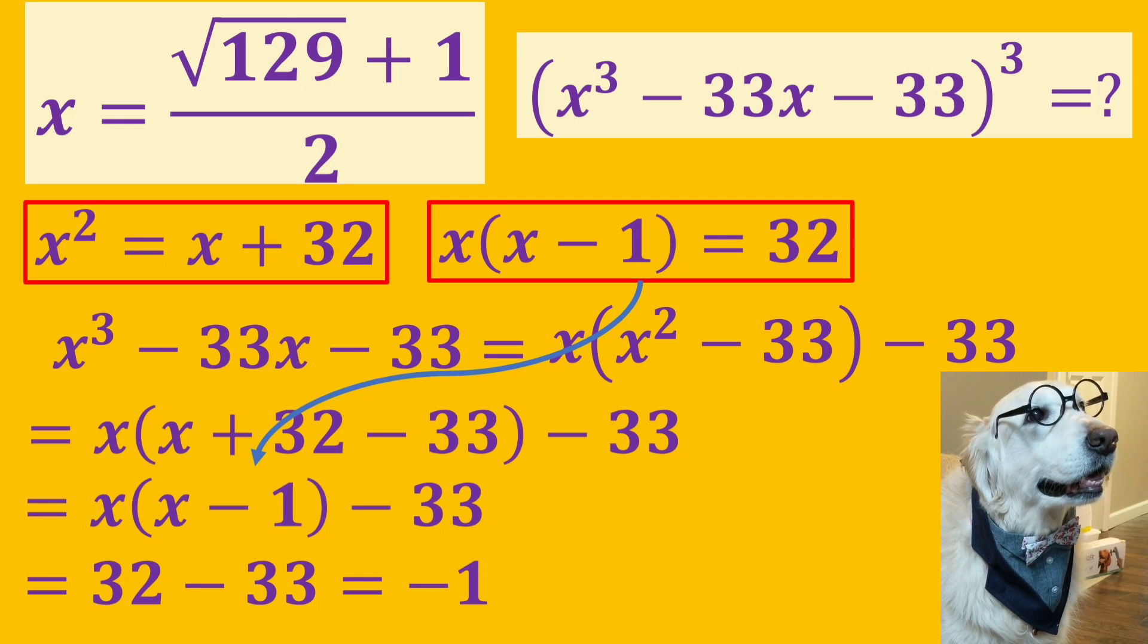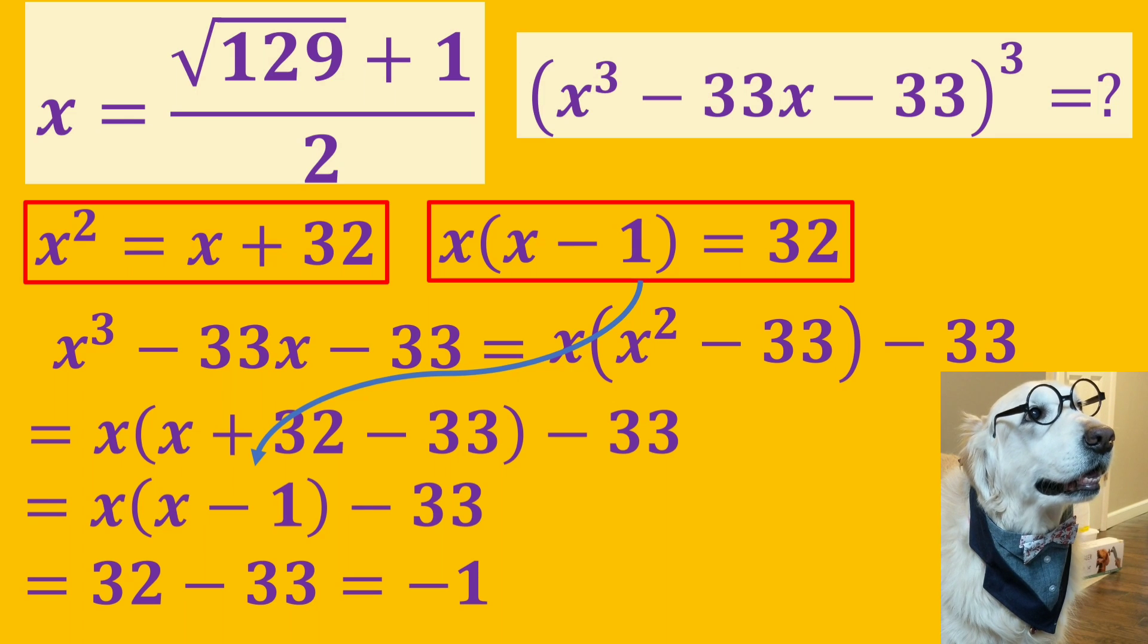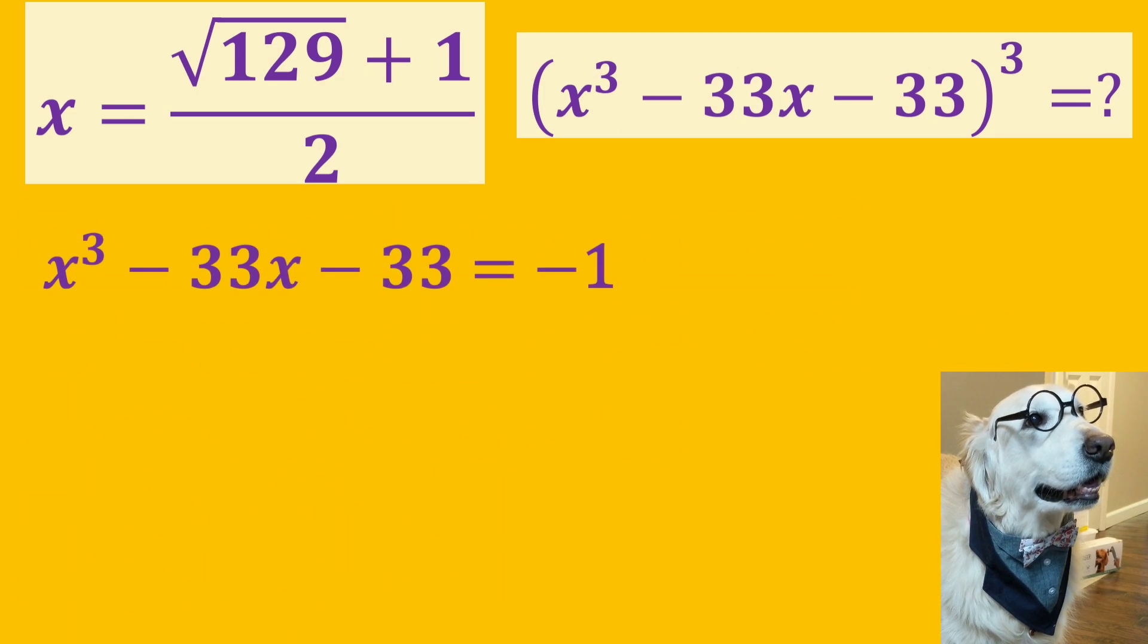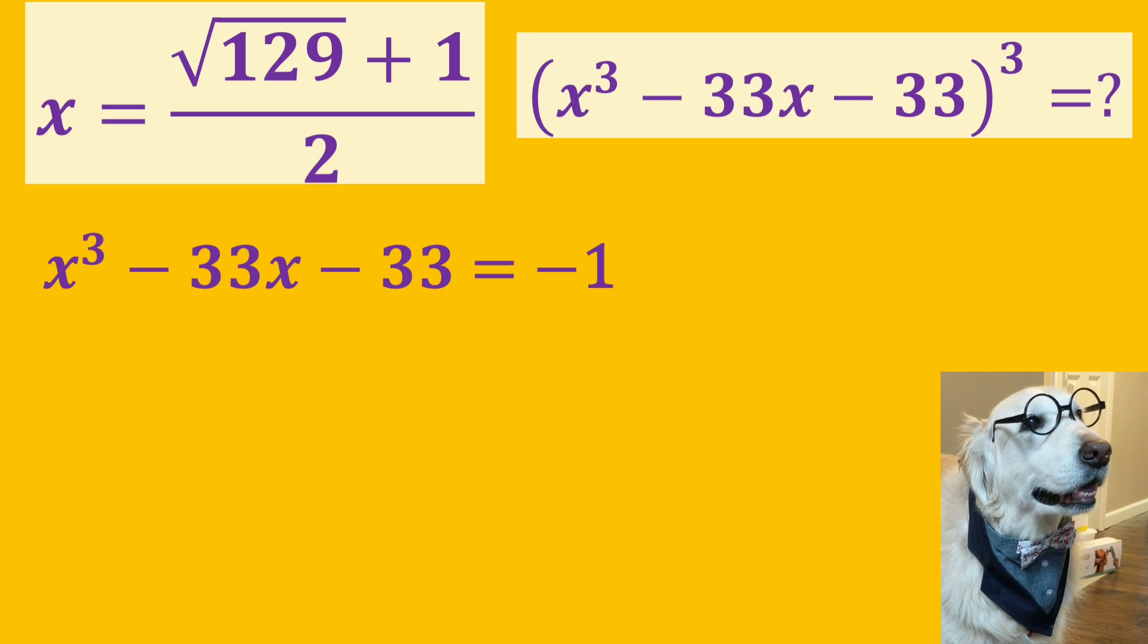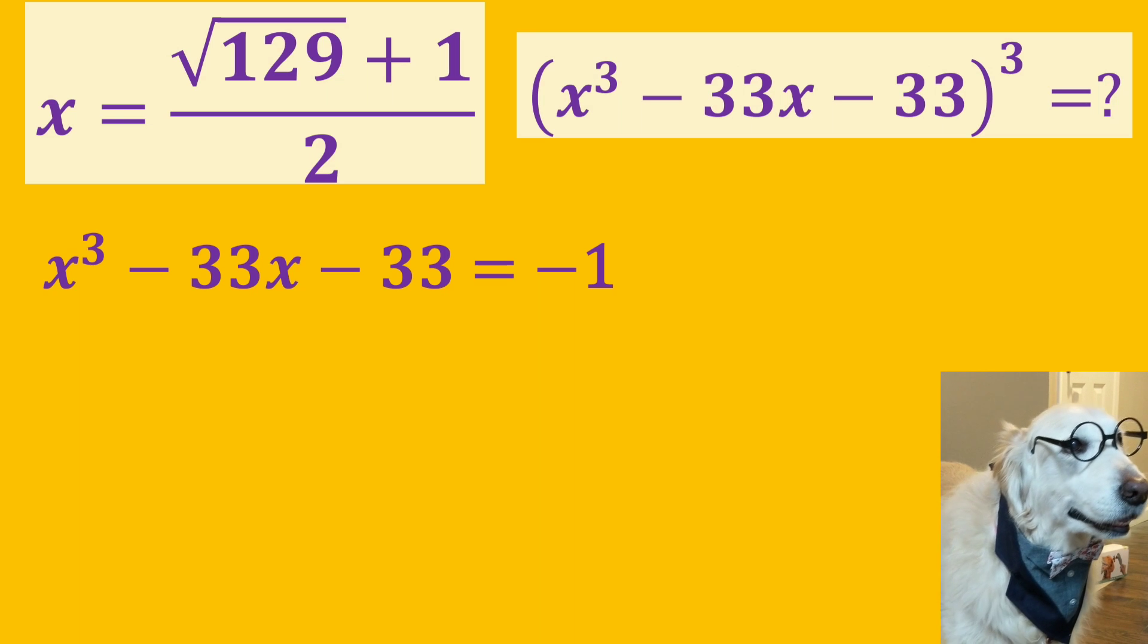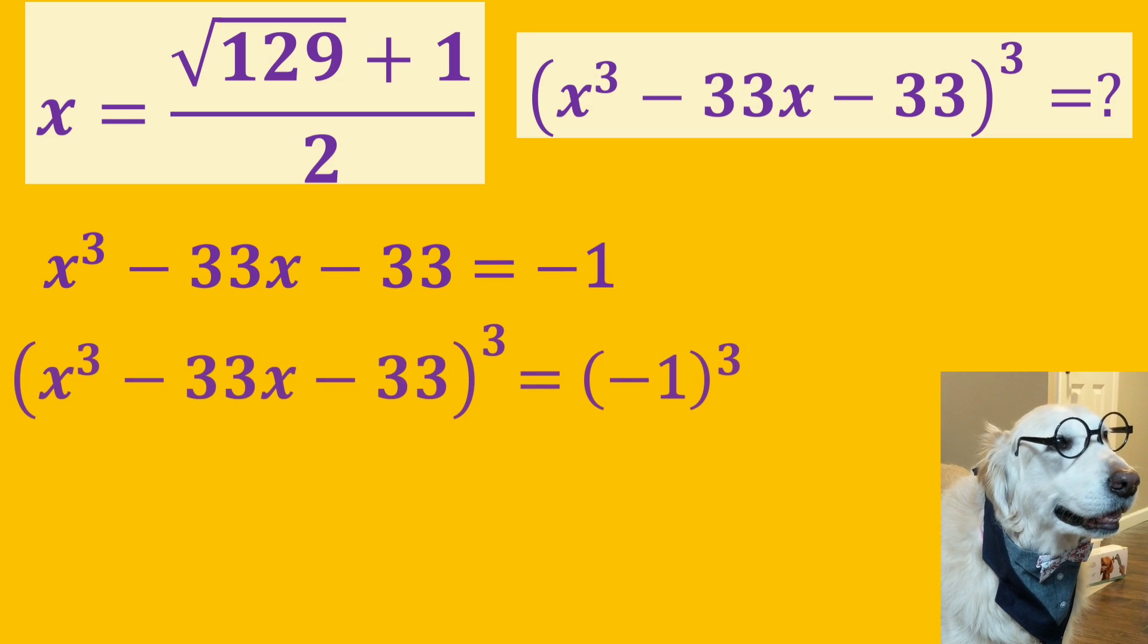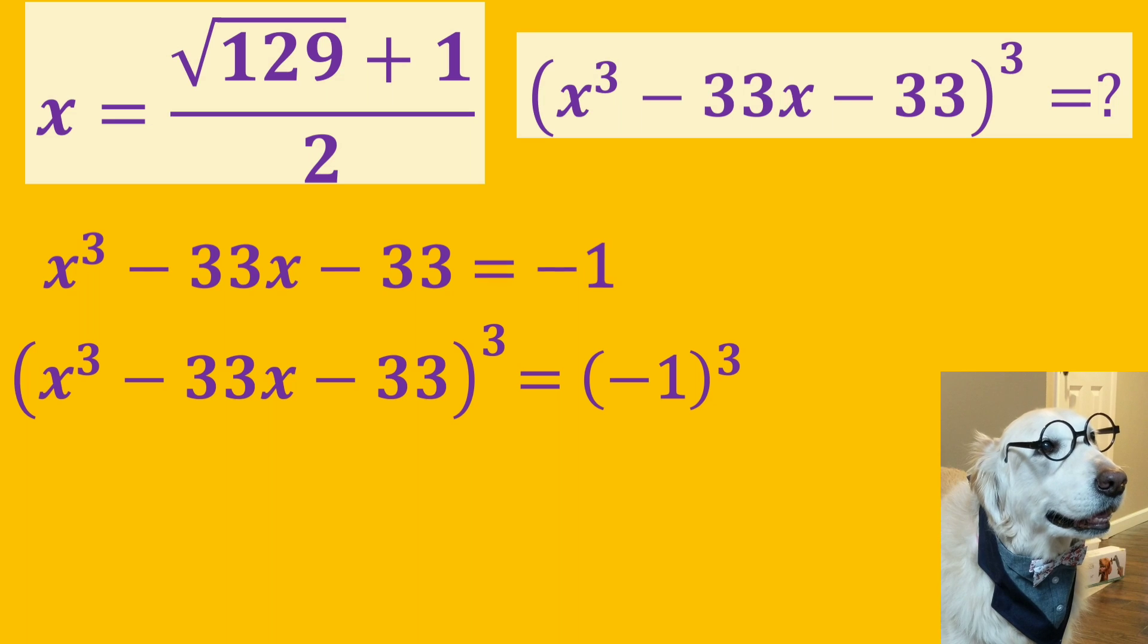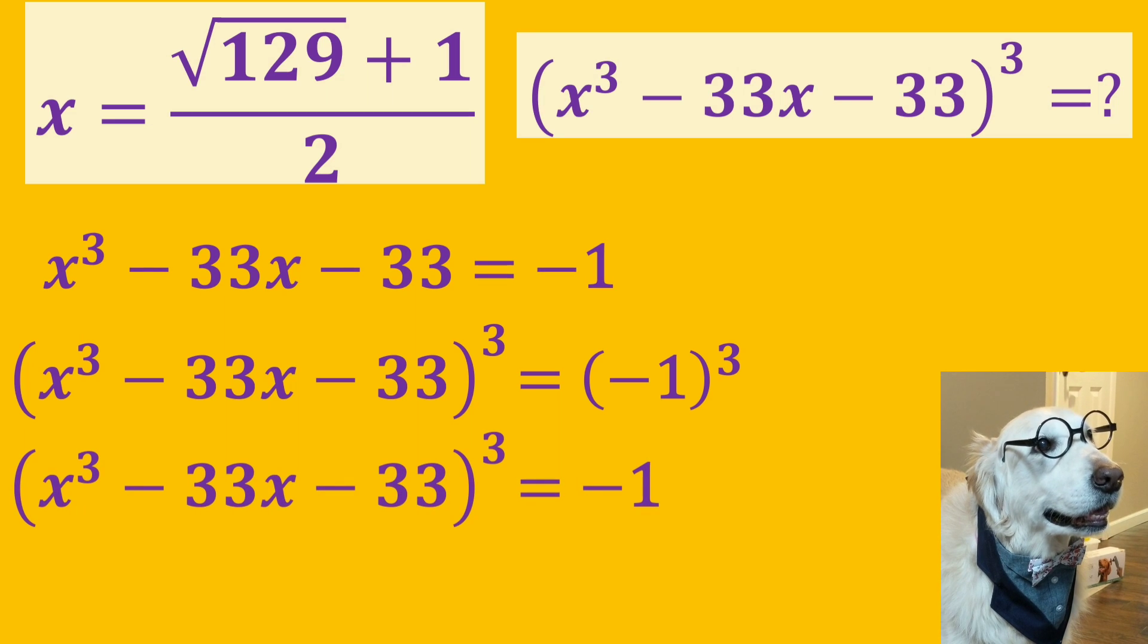So, we get minus 1 as a result. Now, we know that x cubed minus 33x minus 33 is equal to minus 1. We take the third power of both sides. And our answer is minus 1.